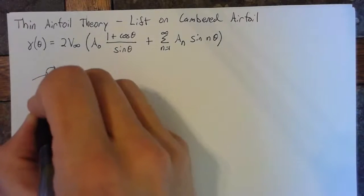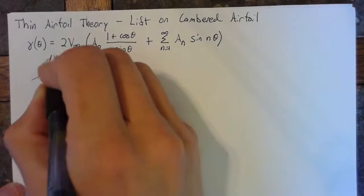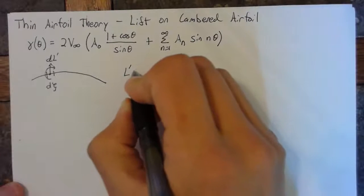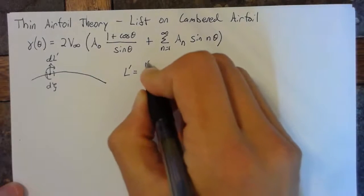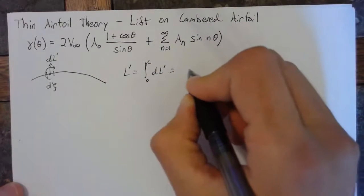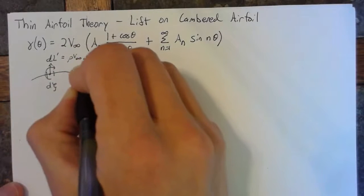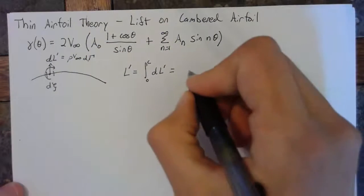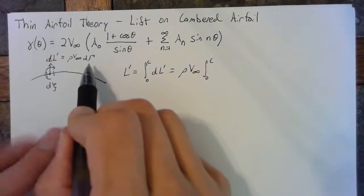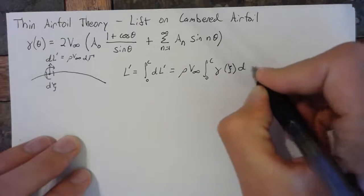Each section d psi of this vortex sheet is going to have some differential lift associated with it. Our total lift is going to be the integral over our entire chord of our differential lift, which in turn is equal to—as the differential lift equals rho times v infinity times the differential circulation—this will be rho times v infinity times the integral from 0 to c, and then we need our differential circulation, which is simply gamma of xi d psi.